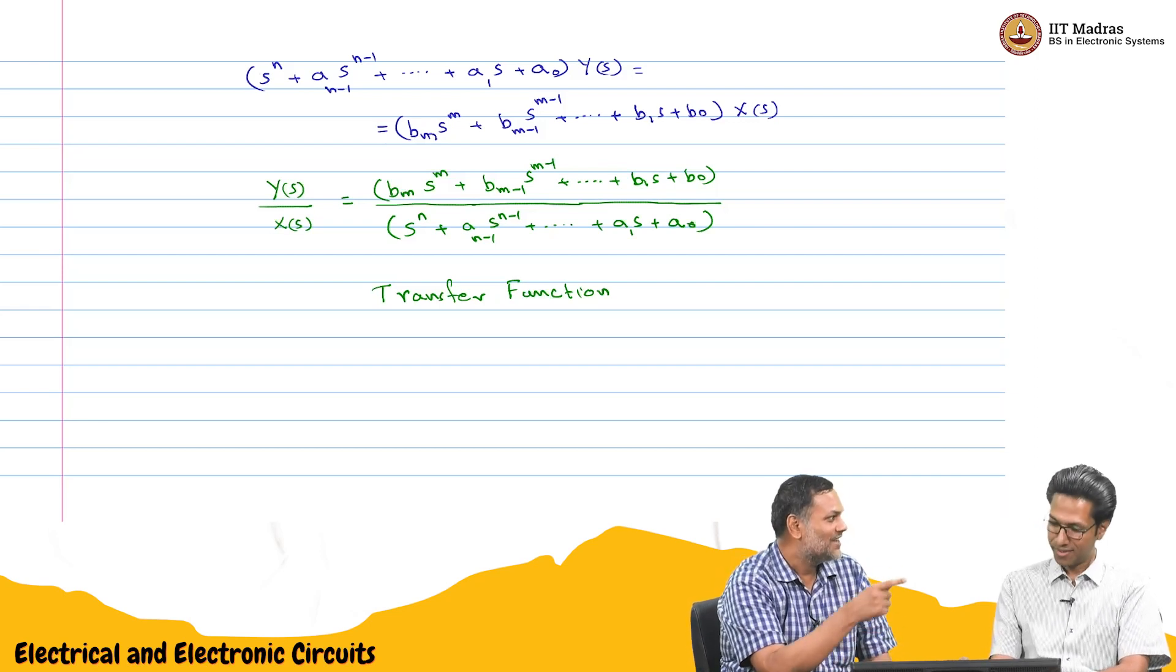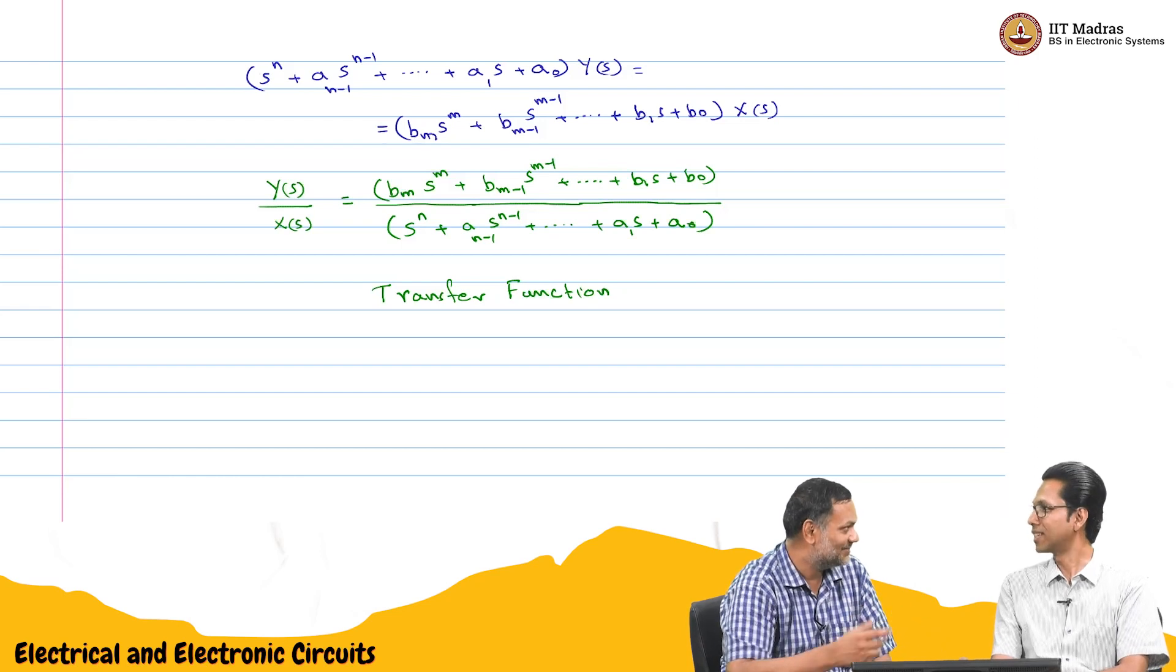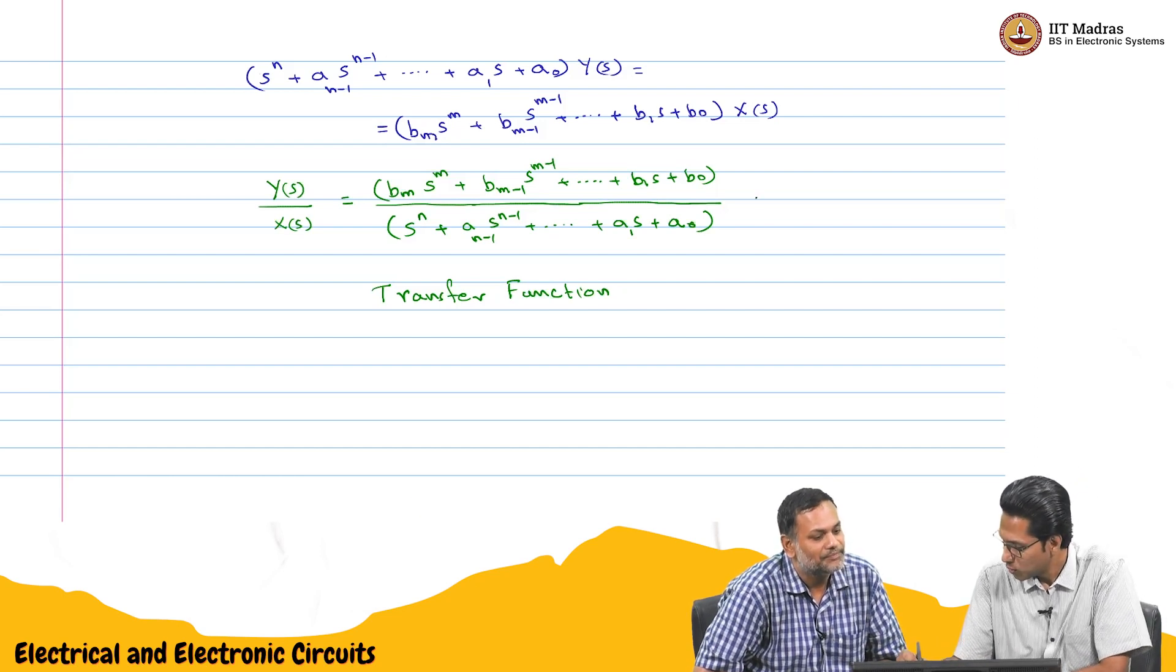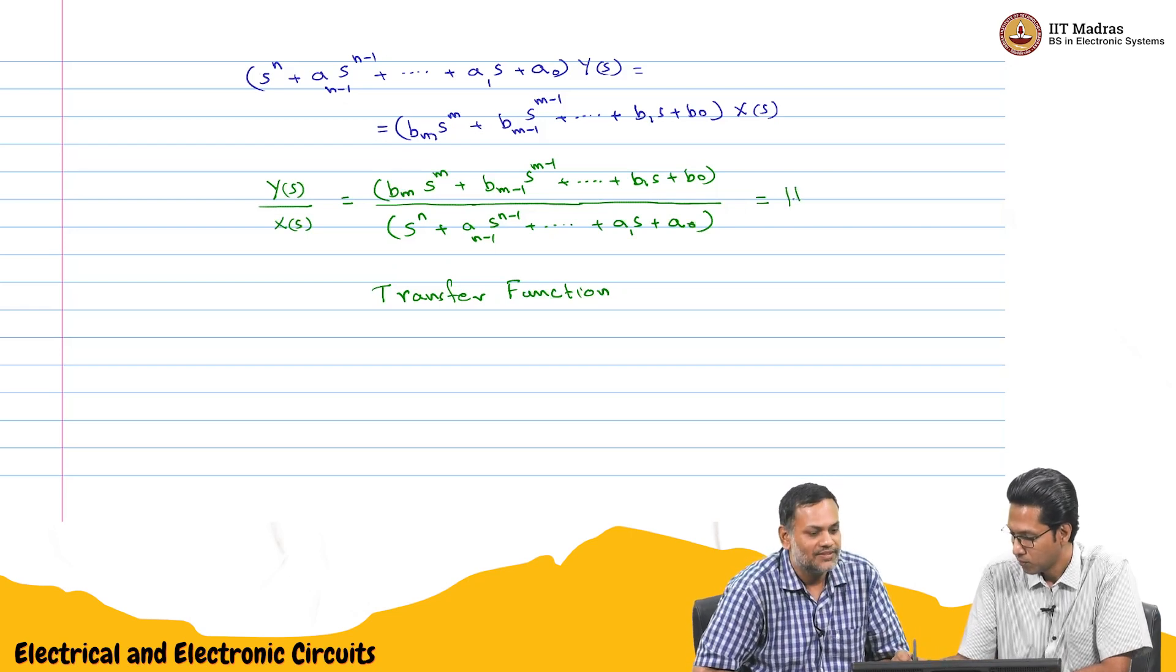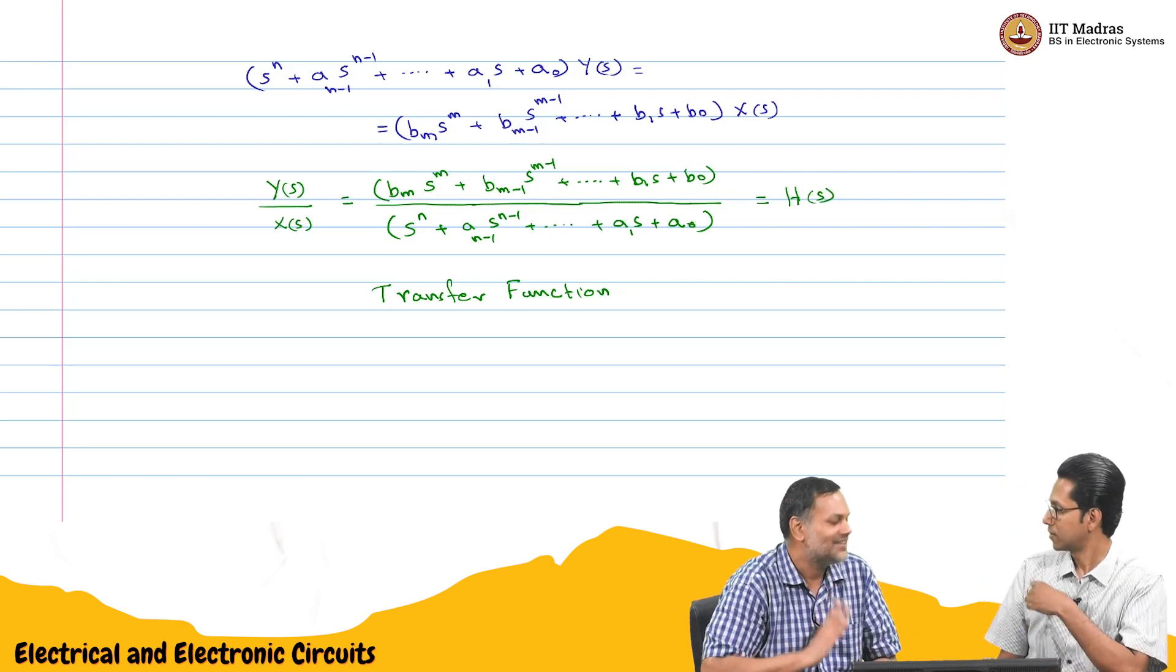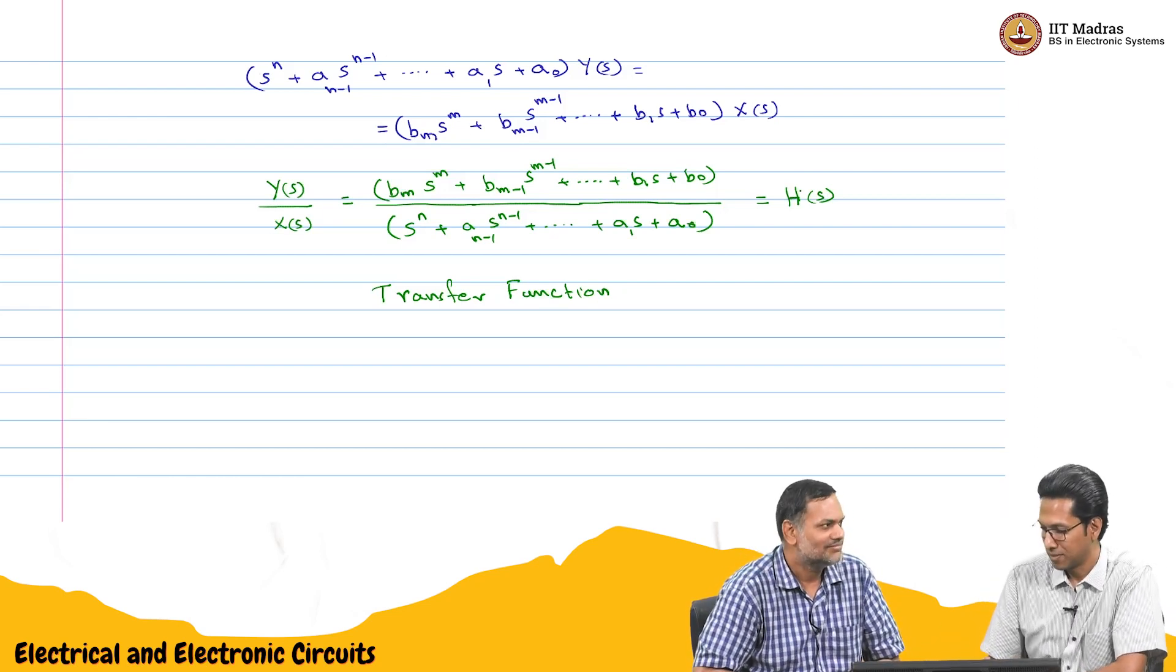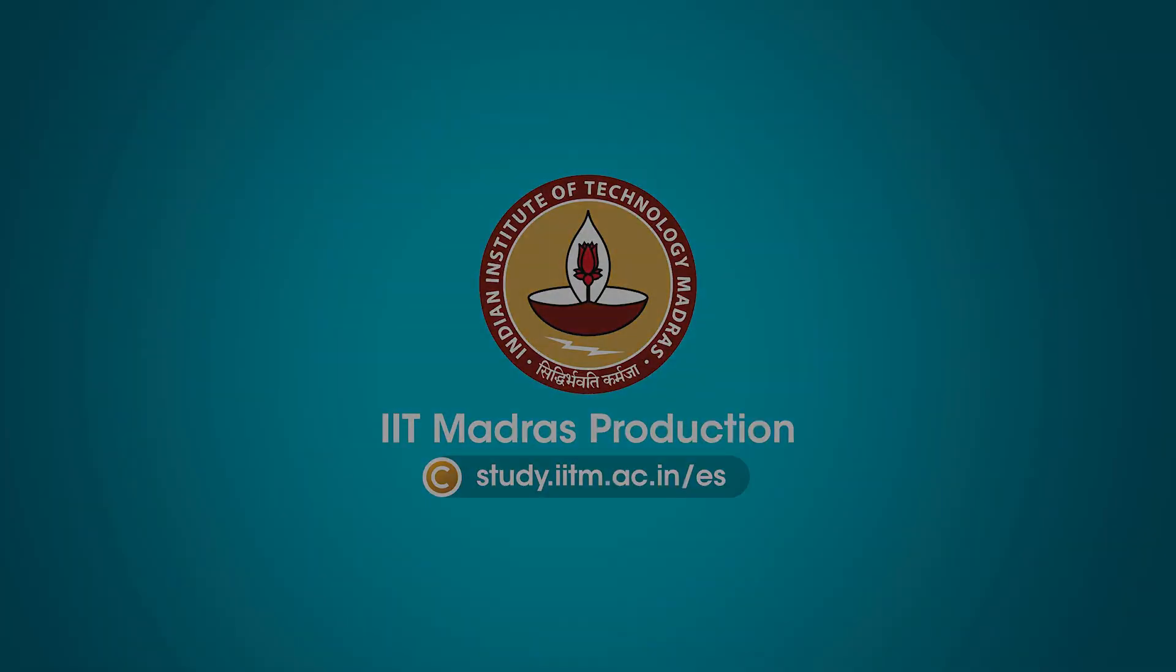So usually I think it is also represented as H of s. H of s. That capital H is the classic, any textbook. We will say a transfer function capital H of s. I have seen some textbooks using G of s also.